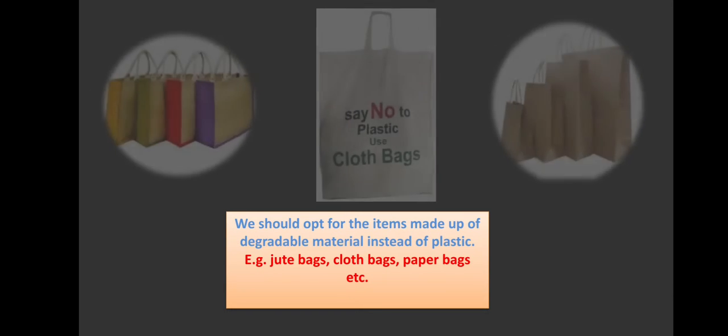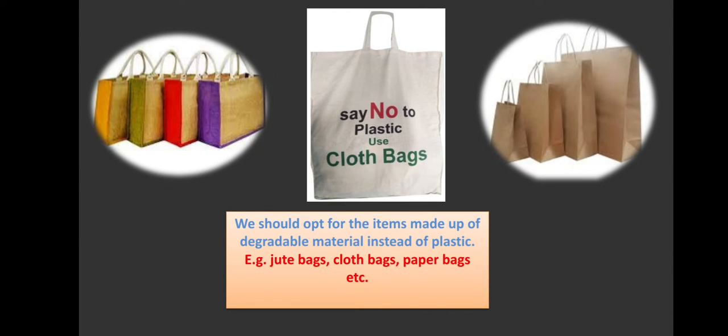We should opt for items made of degradable material instead of plastic. We should always use materials which are easily degradable in nature and don't take a toll on aquatic and land organisms. Examples: jute bag, cloth bag, paper bag, etc. In recent years we are shifting from plastic bags to jute, cloth, or paper bags because it's high time we protect our nature and environment from pollution and global warming.